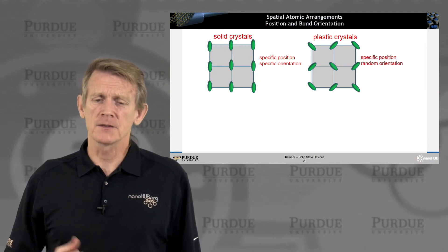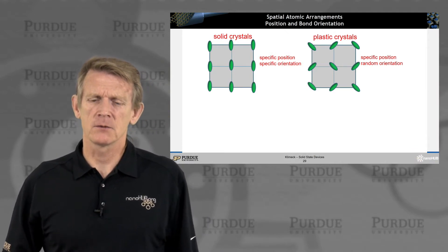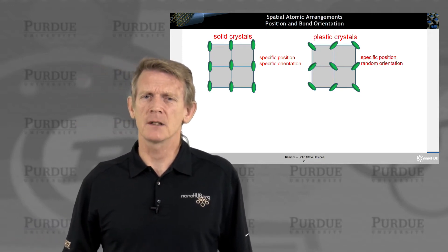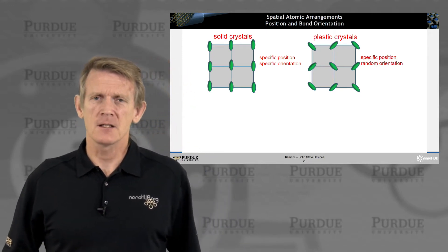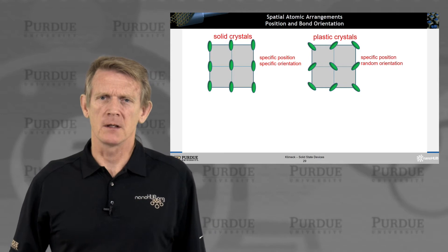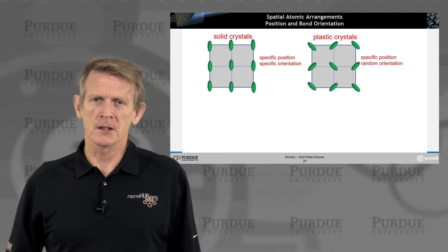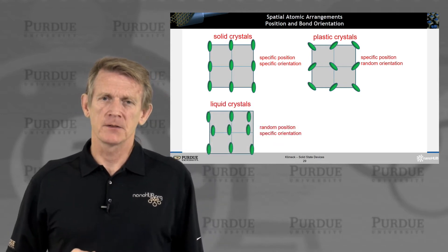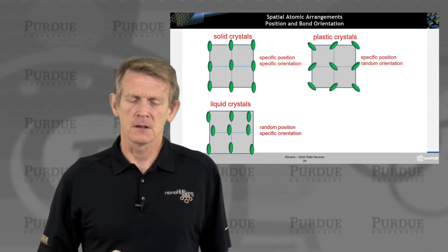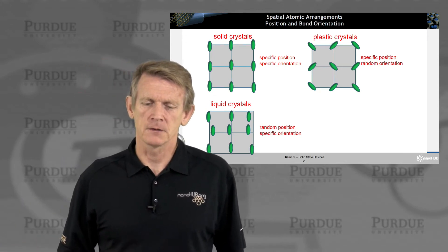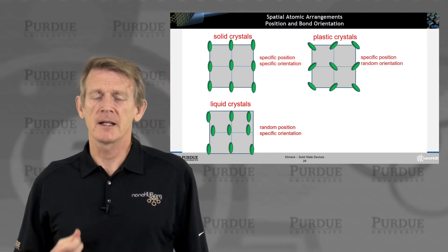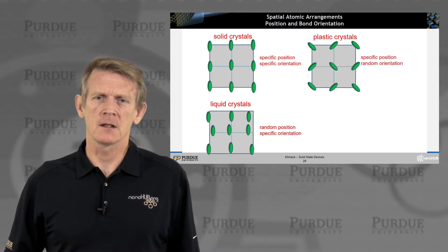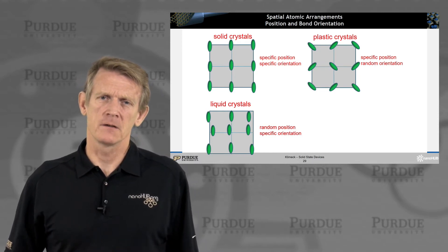There are other crystals, like plastic crystals, which have specific positions of the atoms but random orientations of the bonds — we're not going to deal with that in this course. There's also liquid crystals that you have in liquid crystal displays; they have random positions of the atoms but specific orientation of the bonding.